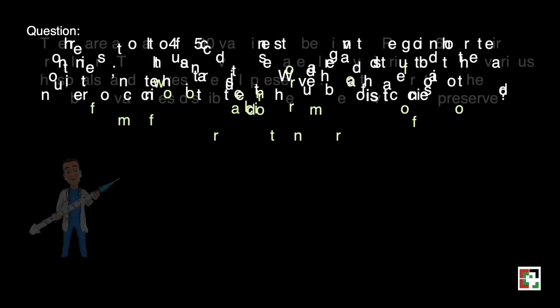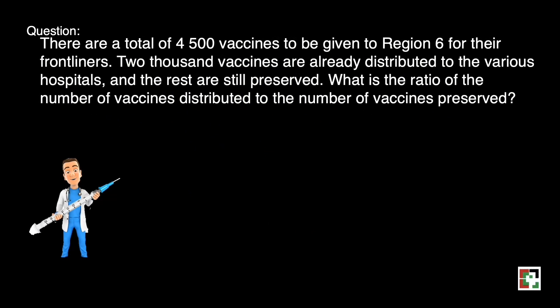Next one. There are a total of 4,500 vaccines to be given to Region 6 for their front liners. 2,000 vaccines are already distributed to the various hospitals, and the rest are still preserved. What is the ratio of the number of vaccines distributed to the number of vaccines preserved?